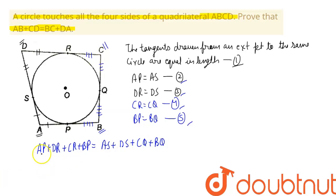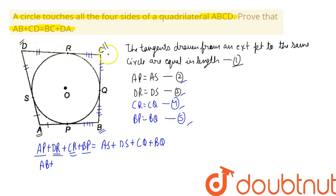On the left-hand side, AP plus BP equals AB, as seen from the diagram. Similarly, DR plus CR equals CD from the figure. So the left-hand side becomes AB plus CD.